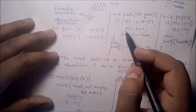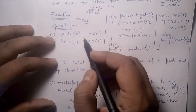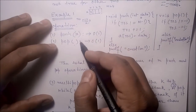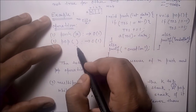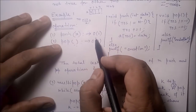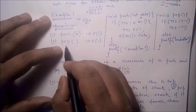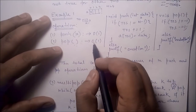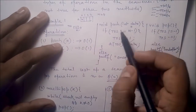For the stack example, there are two operations: push and pop. The complexity of the push operation is O(1) and the complexity of the pop operation is O(1).